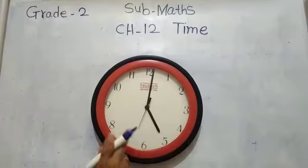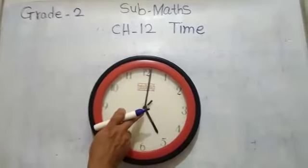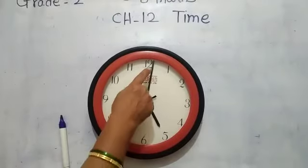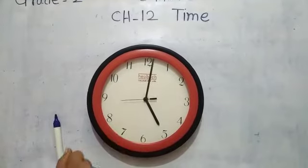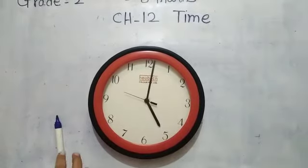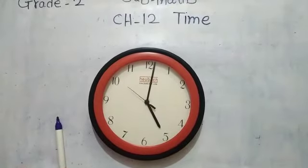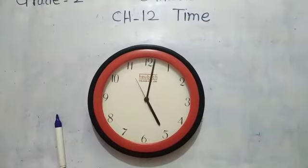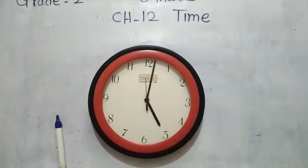Here is a clock. In this clock there are two hands. Look, this is a short hand, and this is a long hand. This short hand is called the hour hand, and this long hand is called the minute hand. In some clocks there is also a third hand, and that is called the second hand.